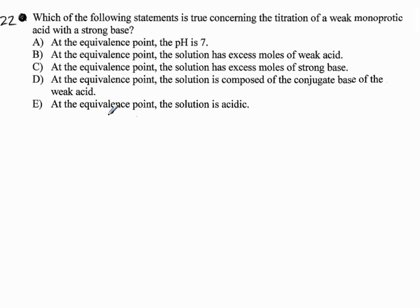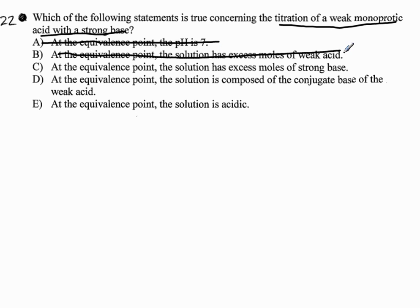Question 22: which of the following is true concerning a titration of a weak acid with a strong base? We know the equivalence point is not 7 — that's only for a strong acid strong base titration. At equivalence, there is no excess moles of acid nor base — that's the definition of equivalence. So B and C get tossed out right there.